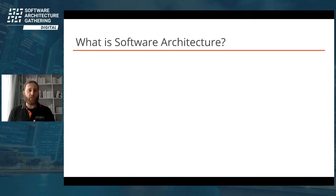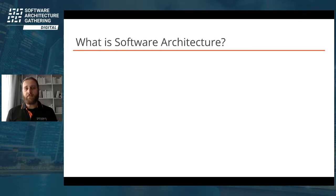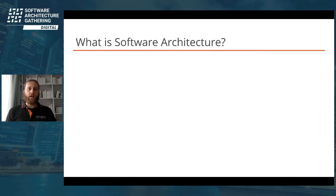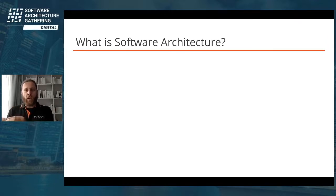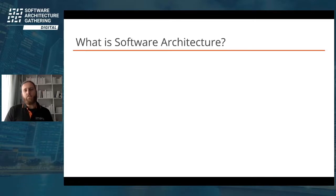The first one is by Martin Fowler and it says: software architecture is about the important stuff, whatever that is. I like it because it's very fuzzy and also very clear at the same time. If we do something and it is important, no matter why, he calls it software architecture.